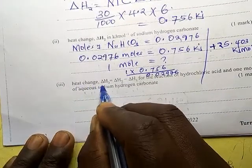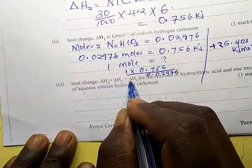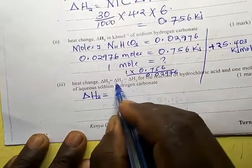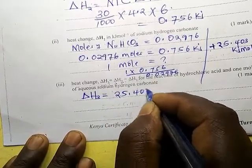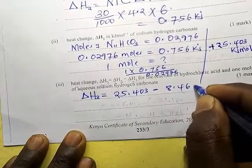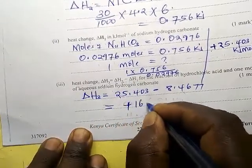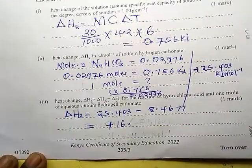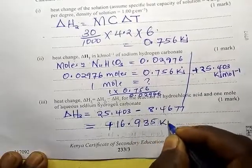Calculate the heat change H3, where H3 equals H2 minus H1. So ΔH3 = ΔH2 − ΔH1 = 25.403 − 8.4677, and this gives us positive 16.935 kilojoules per mole.